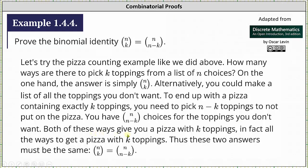Both of these ways give you a pizza with k toppings. In fact, all the ways to get a pizza with k toppings. Thus the two answers must be the same. n choose k equals n choose n minus k.